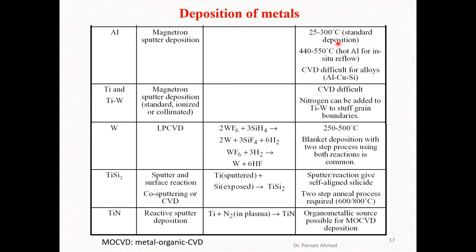Standard aluminum deposition temperatures range from 25 to 300 degrees centigrade, but temperatures of 440 to 550 degrees centigrade are used for hot aluminum reflow. CVD is difficult for aluminum alloys such as aluminum-copper-silicon. For titanium and titanium-tungsten deposition, magnetron sputtering (standard, ionized, or collimated) is used. CVD is difficult here because nitrogen can be added to titanium at grain boundaries.